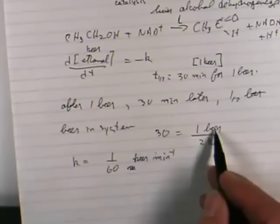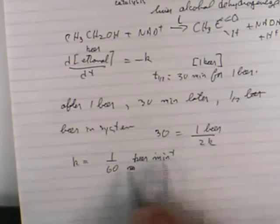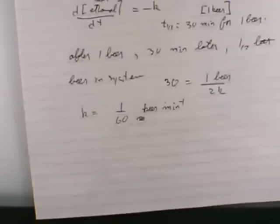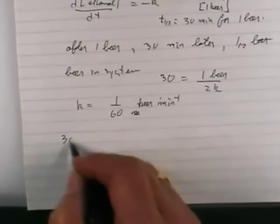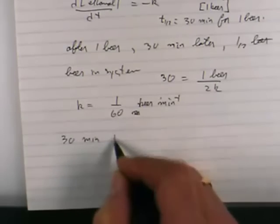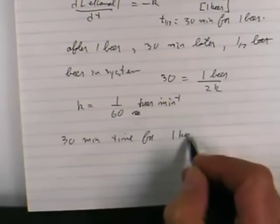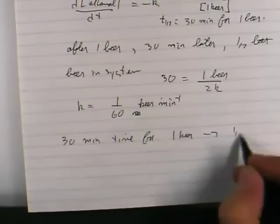Because the rate constant, this is minutes, this is beer, so it's one beer. The rate constant is one-sixty beers per minute. That doesn't change. It's true for all different concentrations. We know 30 minutes, time for one beer to go to half a beer.